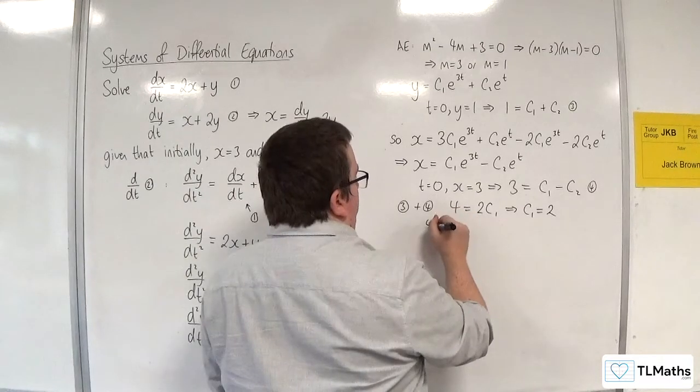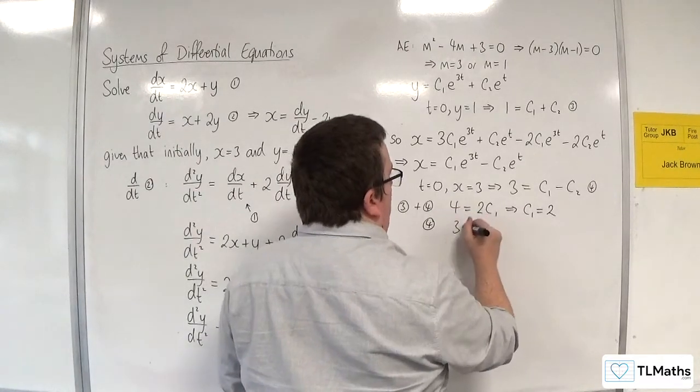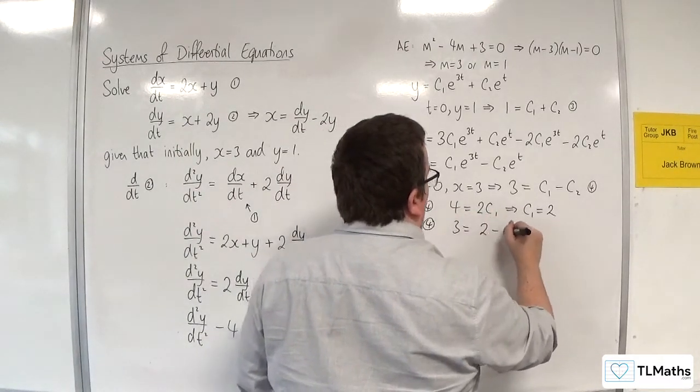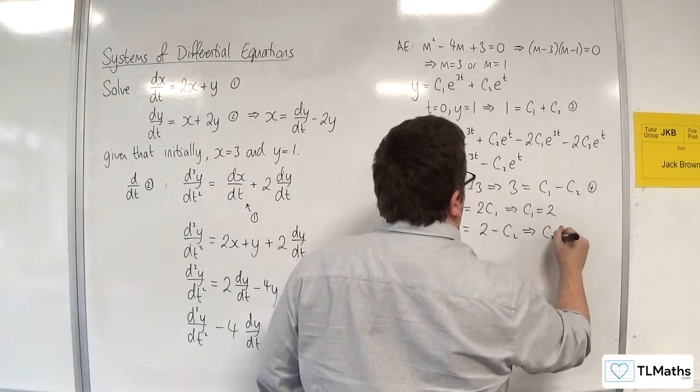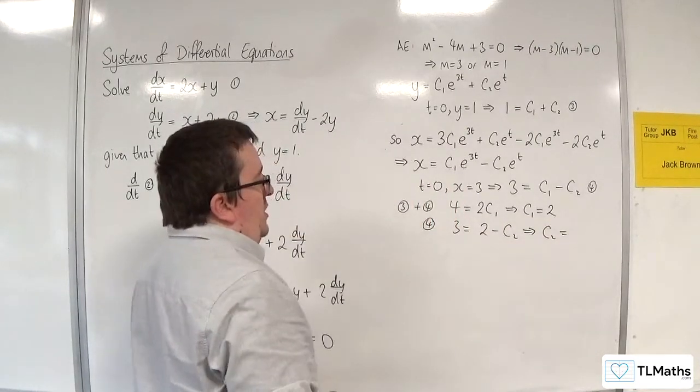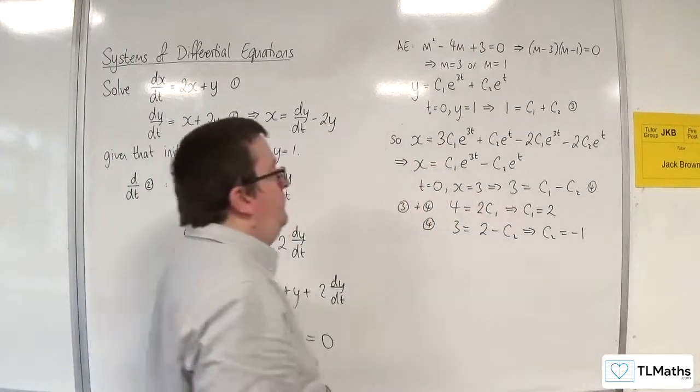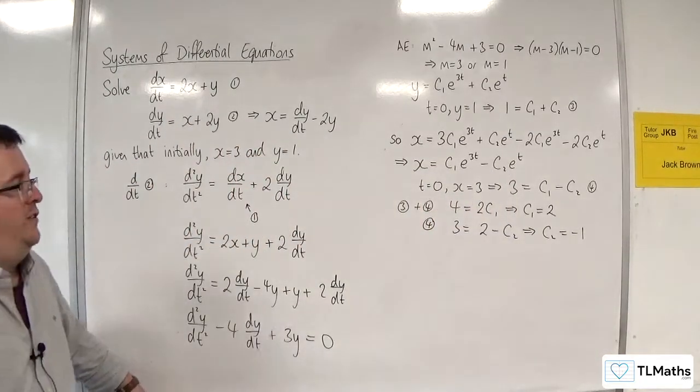So then in equation 4, we'll have 3 is equal to 2 take away c2. So c2 is going to have to be equal to minus 1. So we've now got the c1 and c2.